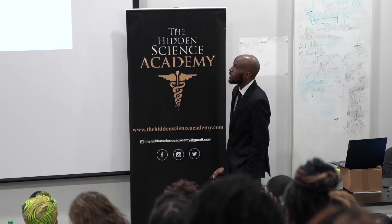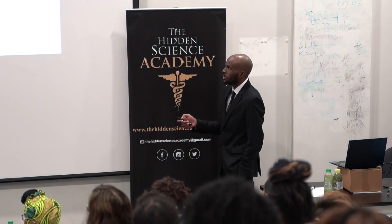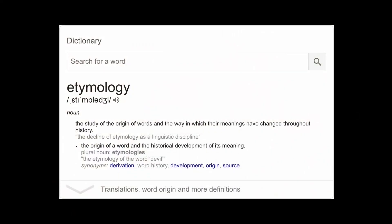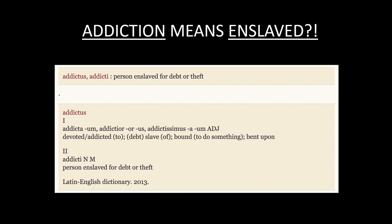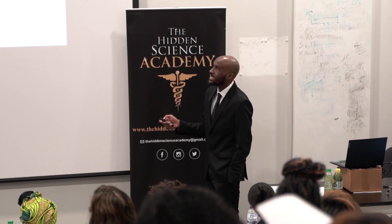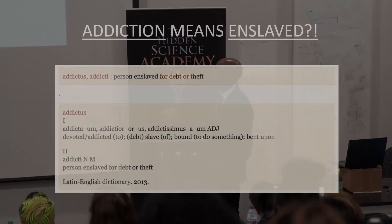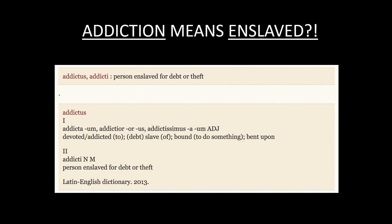The easiest way to break down language is to go to the etymology of words — the study of the origin of words and the way their meanings have changed throughout history. When we look at the word 'addiction,' I found it comes from Latin — addictus — and addiction means enslaved. Person enslaved for debt or theft. So if you're addicted to something, you're a slave to that thing. You're still a slave.